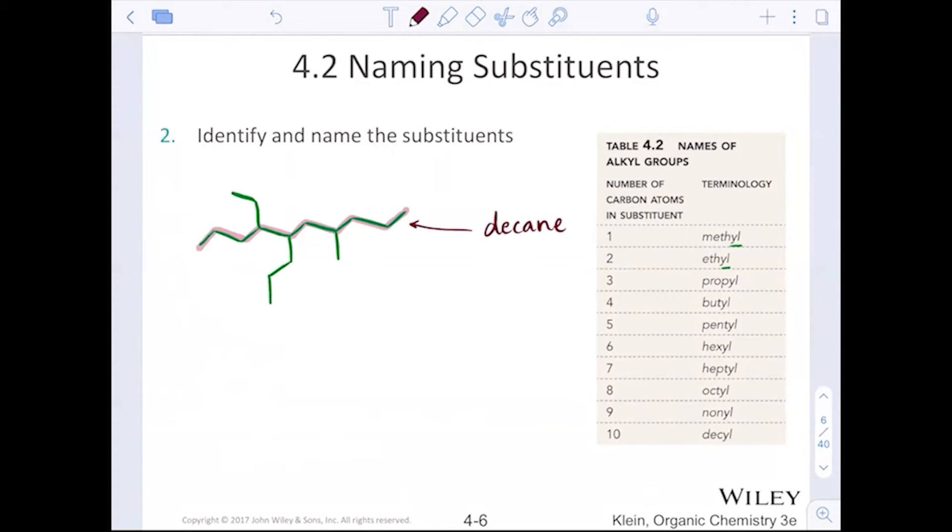Now naming of the substituents. Naming of substituents is going to be anything else that hasn't been numbered yet, hasn't been highlighted. So we have this group with two carbons. We have this group with three carbons and this group with one carbon. So in naming of substituents, we want to name them very similarly, take the number of carbons and add the YL ending. So two carbons, ethyl. Three carbons in a row, propyl. One carbon, methyl.